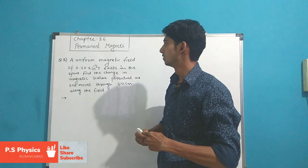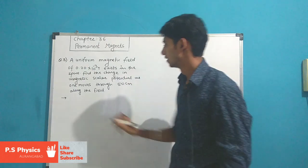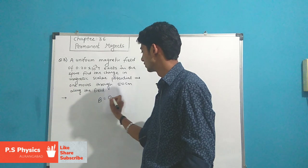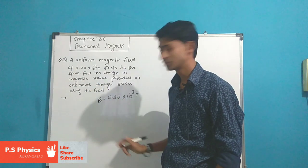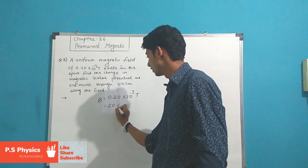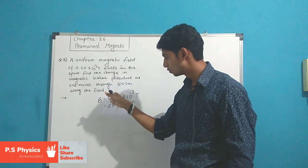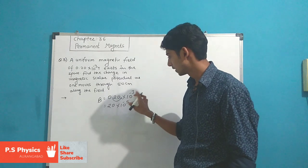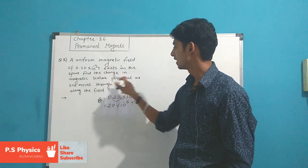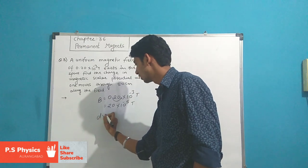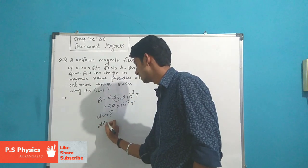Now question number 3 from the topic Permanent Magnets. A uniform magnetic field B = 0.20×10⁻³ T is given, which equals 20×10⁻⁵ T. We need to find the change in magnetic scalar potential dV as one moves through a distance dL of 50 cm. In electrostatics, the relation is E = −dV/dx, so dV = −E·dx. Similarly for magnetic field, dV = B·dr.